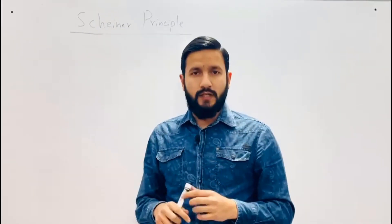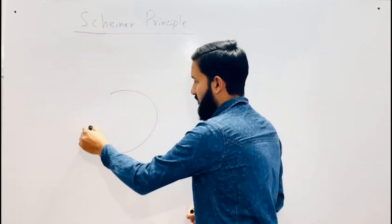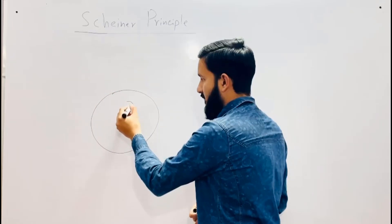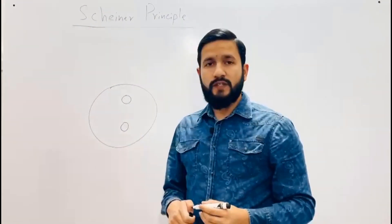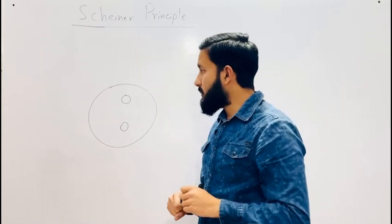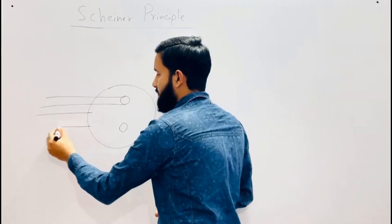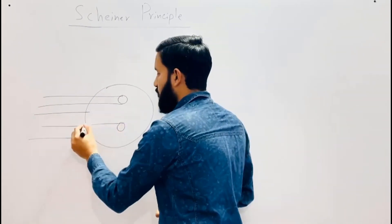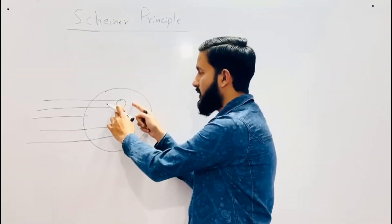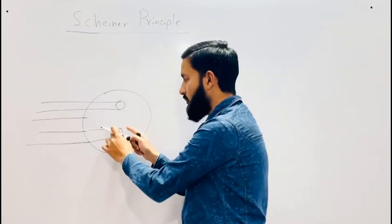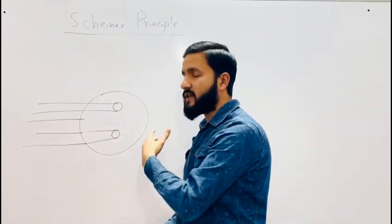We use the Scheiner disc. The Scheiner disc is a small disc having two pinhole apertures. The function of this disc is that it limits the light rays coming from a distant object into two small light bundles — one bundle of light goes from one pinhole and one bundle of light rays goes from the other.